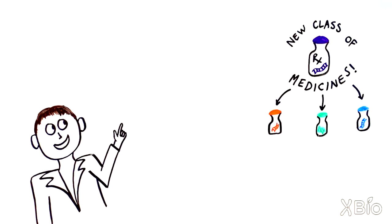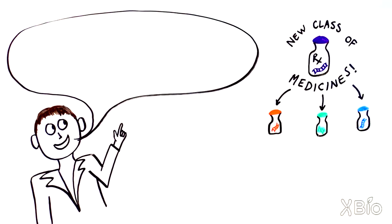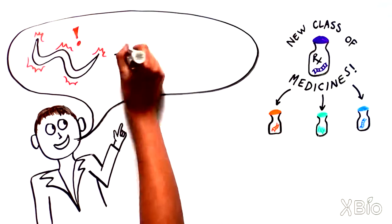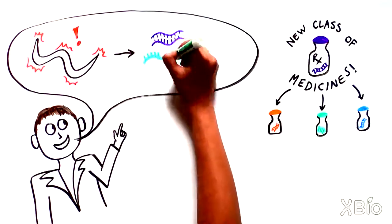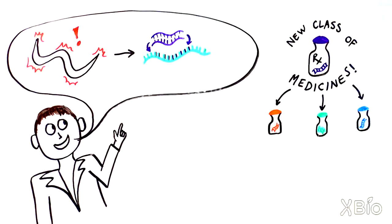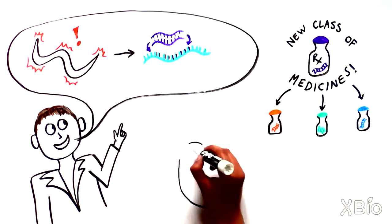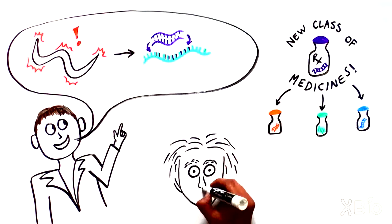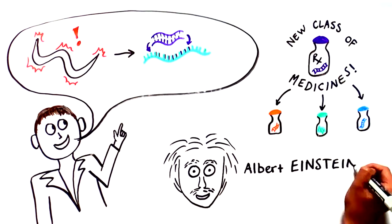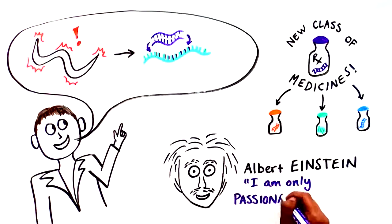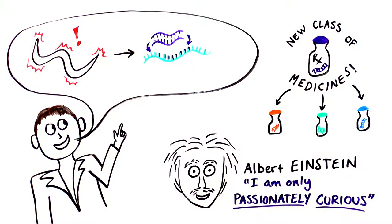Looking back, it's pretty incredible that an entirely new class of medicines all started with some twitching worms. But this is actually very typical of how science works. Breakthrough discoveries begin with curious scientists following unusual observations. Albert Einstein summed it up best by saying, I have no special talents. I am only passionately curious.